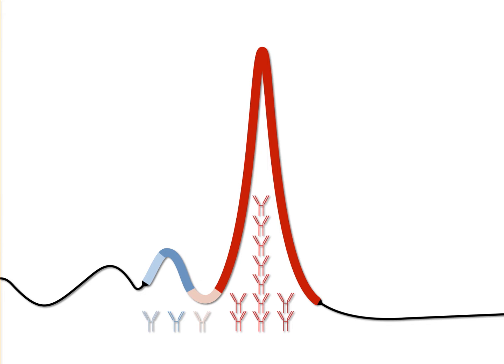The monoclonal peak in the electropherogram shows that with regard to antibody production, all cells of the plasma cell clone are identical because they stem from a single transformed B lymphocyte.